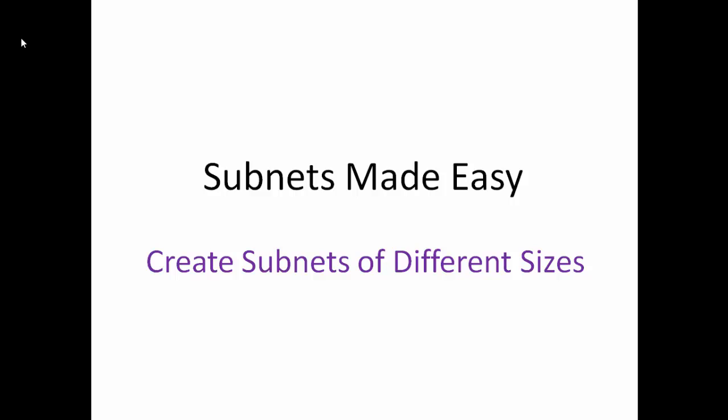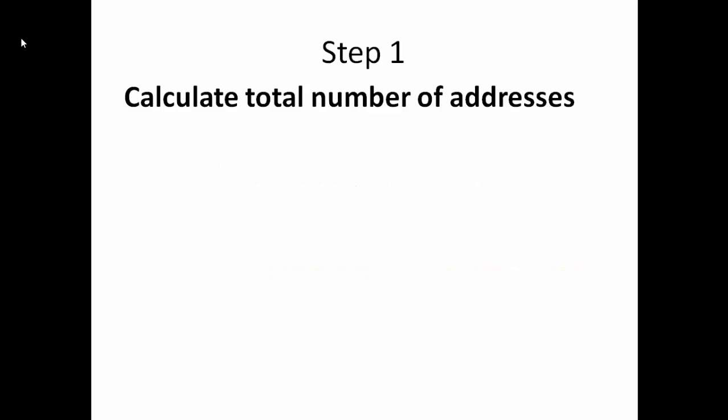This video covers how we create subnets of different sizes. We follow the first step just like we did creating subnets of equal sizes. We get the total number of addresses and assign this to our variable T. We figure that out by saying T equals 2 to the power of 32 minus our netmask or our prefix.